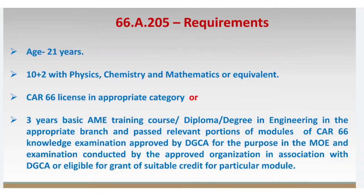To summarize eligibility requirements: your age must be 21 years, you must have 10+2 with PCM or an equivalent qualification. Second, you must have a CR-66 license. If you do not have a CR-66 license, then you must have completed a 3-year AME training course or a diploma/degree, along with having passed the relevant modules in the appropriate category — for example B1.1 requires 11 modules, B2 requires 10 modules — as required by the CR-145 organization maintenance organization exposition.